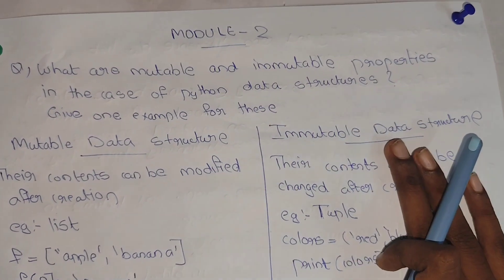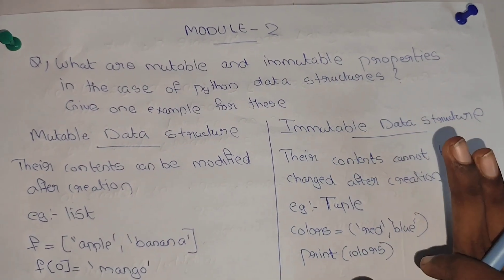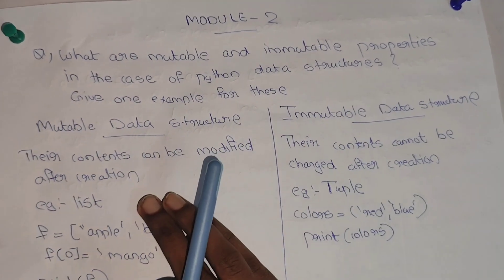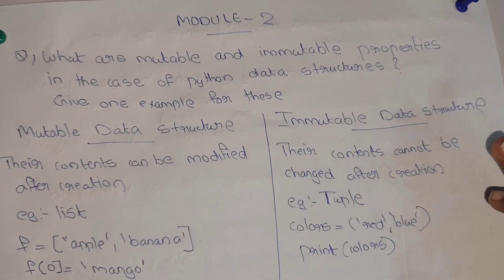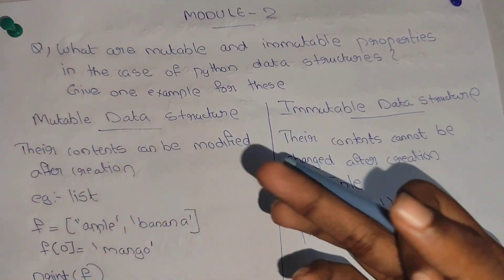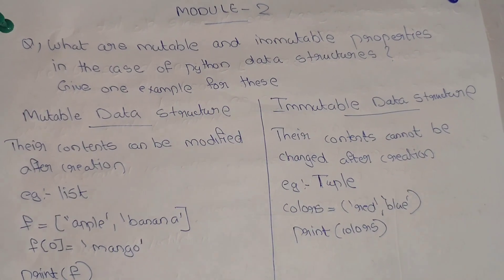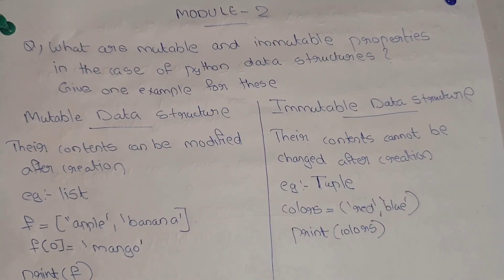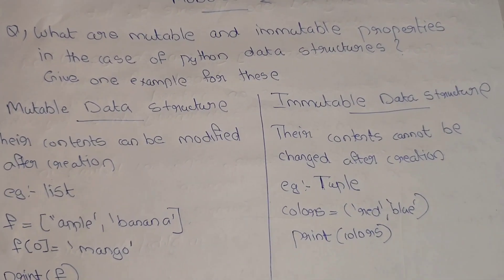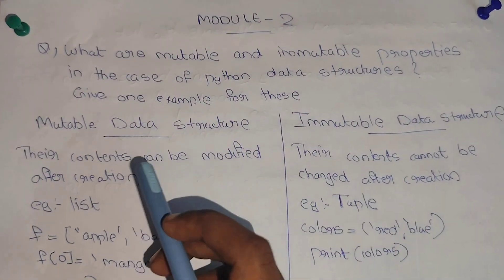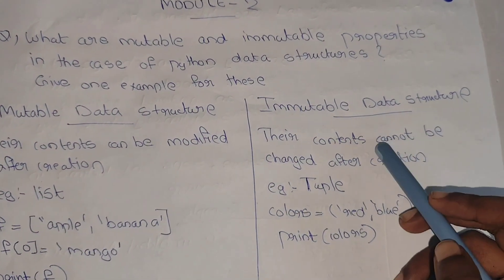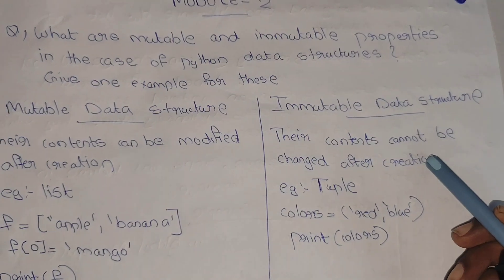What is mutable and immutable data structure? Mutable data structures: their contents can be modified after creation. Immutable data structures: their contents cannot be changed after creation.